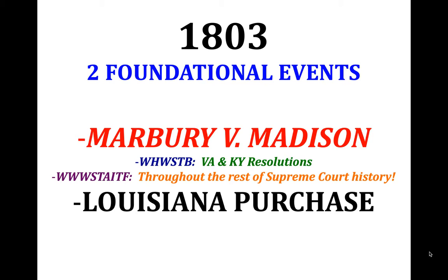In the Virginia and Kentucky Resolutions, Jefferson writing for Kentucky and Madison writing for Virginia said the Alien and Sedition Acts are unconstitutional, and that states under compact theory have the right to nullify them — because we as states came together to create the Constitution, and if we don't like something, we can say no to it. That idea didn't take off; no other states adopted it. But it left undecided who has the ultimate call on deciding the constitutionality of laws passed by Congress. We'll see that sort of get decided in Marbury versus Madison, though it doesn't totally gain traction immediately.